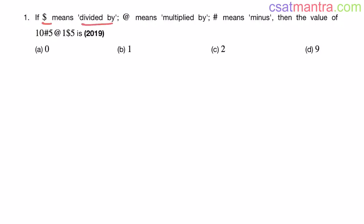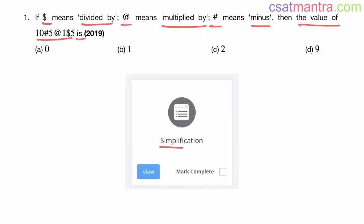If $ means divided by, at means multiplied by, hash means minus, then the value of this expression is. This question is based on simplification lecture which we have learned in number system chapter. Asked in 2019.